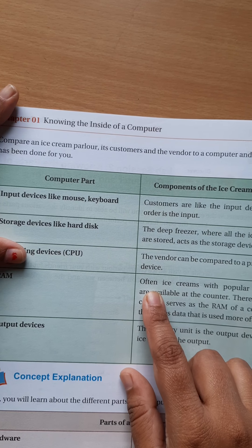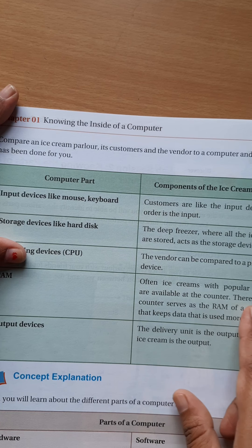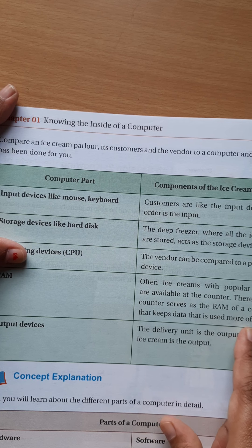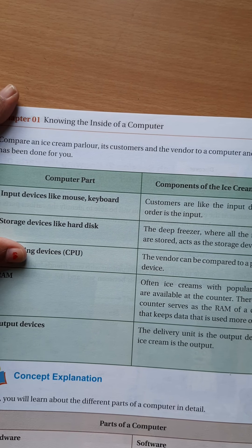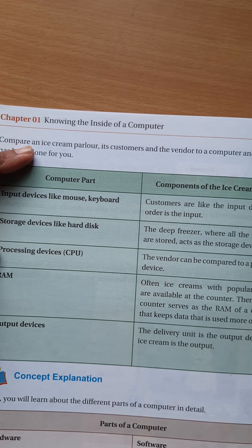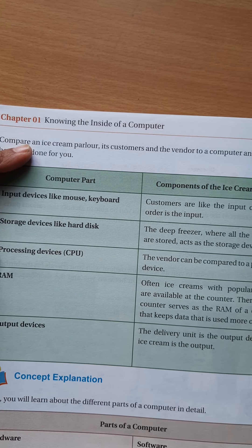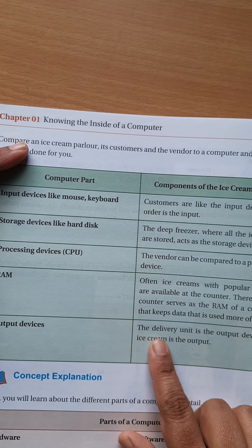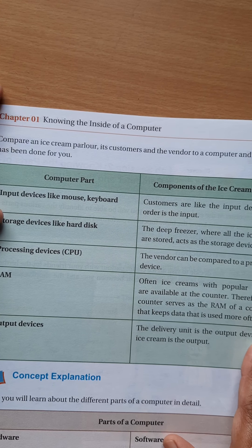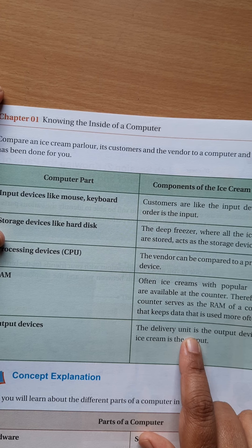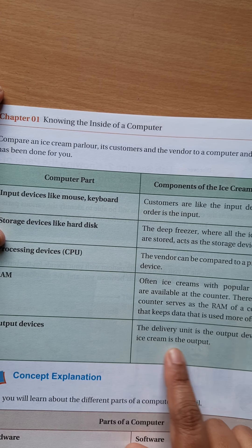Ice creams with popular flavors are available at the counter, so the counter serves as the RAM of a computer — it keeps the data that is used more often. When the vendor processes the order, the ready ice cream is compared to RAM. The delivery unit is the output device, and the ice cream itself is the output.